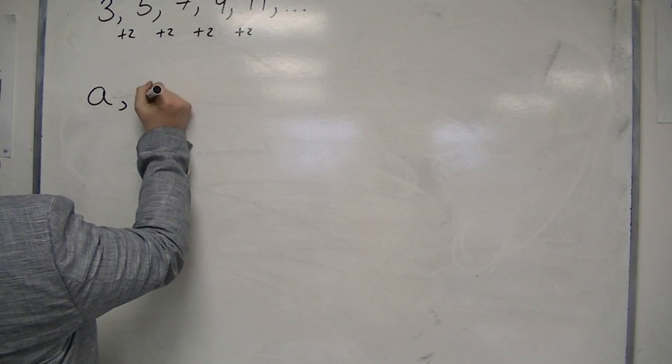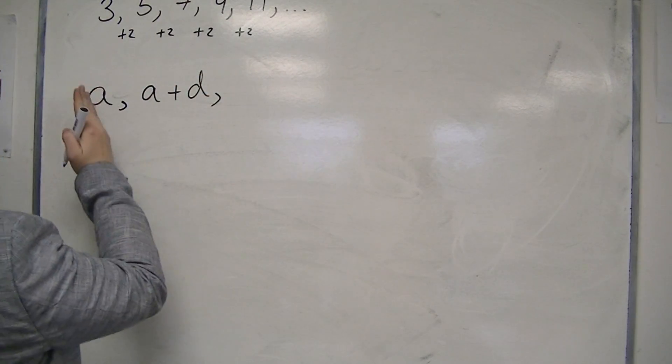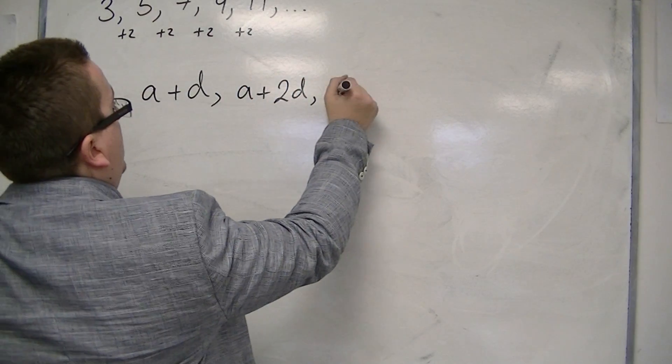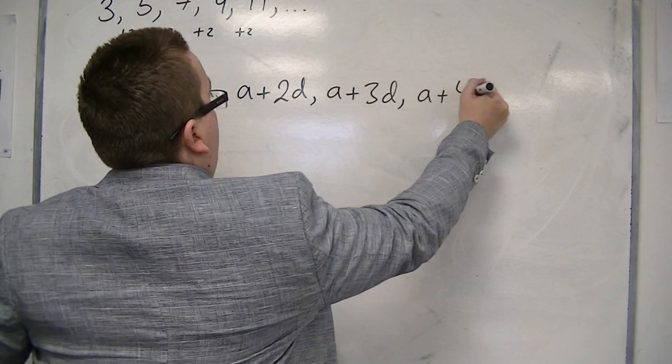then my sequence would look like this: A, A plus D, A plus 2D, A plus 3D, A plus 4D, etc.